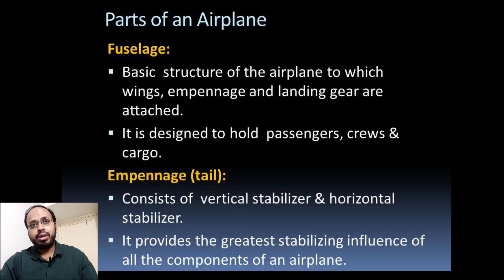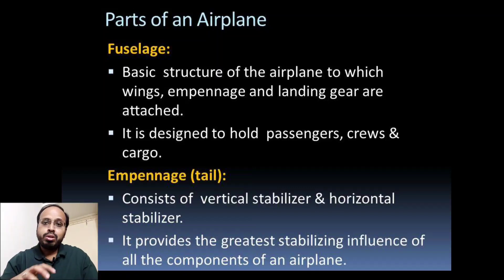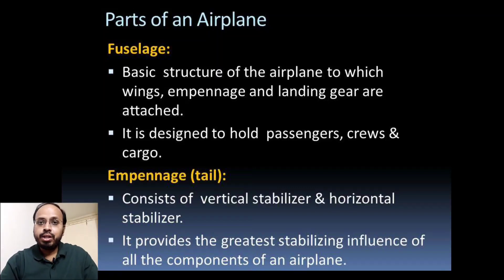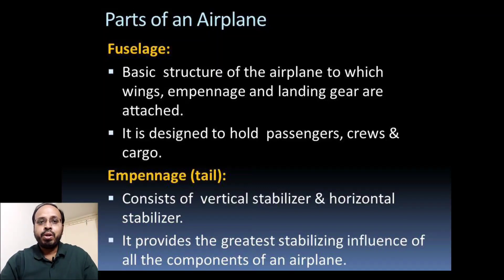The fuselage is the basic structure of the airplane to which the wing, empennage, and landing gear are attached. It is generally designed to hold the passengers, crew, and cargo. The empennage, or tail section, possesses a vertical stabilizer and horizontal stabilizer — very useful control surfaces for providing stability and the greatest stability required during aircraft performance.